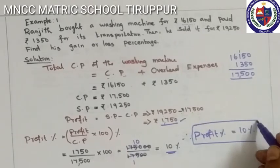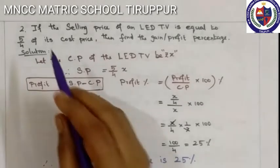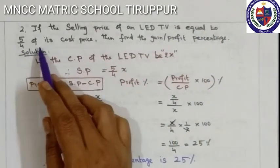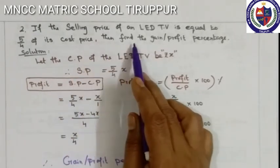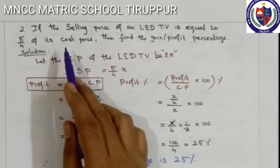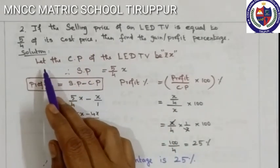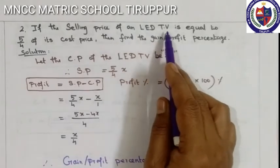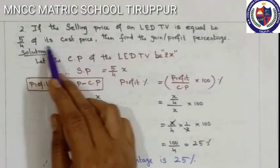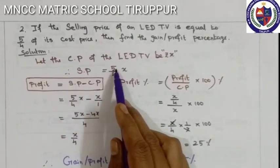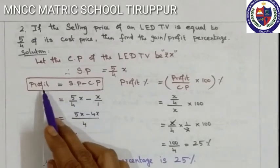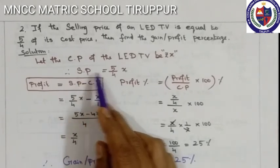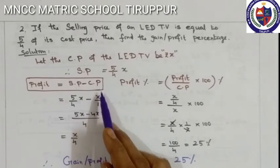Second sum: If the Selling Price of an LED TV is equal to 5/4 of the Cost Price, find the gain or profit percentage. We don't know the Cost Price value, so let the Cost Price of the LED TV be X. Selling Price equals 5/4 of Cost Price, so Selling Price equals 5X/4.